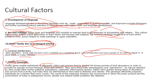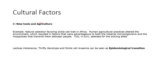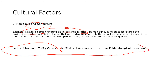New agricultural tools made large-scale farming possible, but this also created stagnant water, breeding mosquitoes that transmitted malaria. As a result, natural selection started favoring the sickle cell trait in Africa and other regions, explaining the presence of sickle cell anemia in those populations. These three agricultural effects — lactase persistence, thrifty genotype, and sickle cell — can all be viewed as epidemiological transitions.